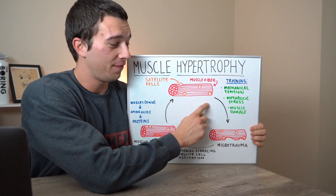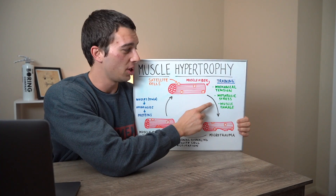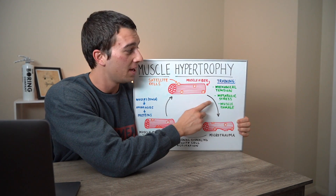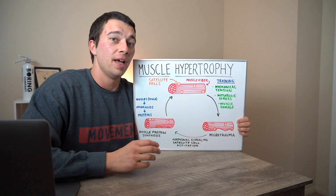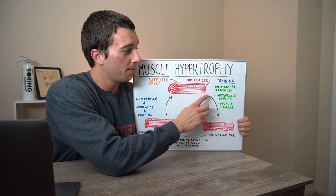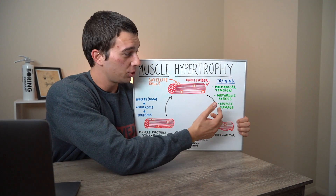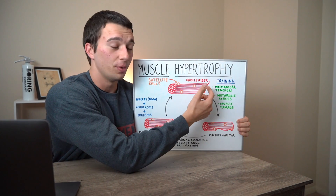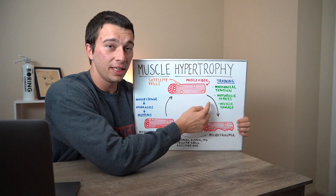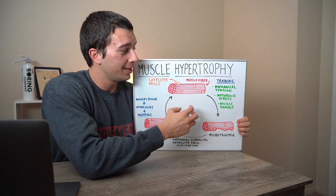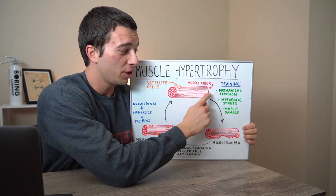Step one is to go from a normal fiber to one that has had some microtrauma — and how do we do that? With training. These are Dr. Schoenfeld's three mechanisms of muscle hypertrophy: mechanical tension, metabolic stress, and muscle damage. The training you program as a strength coach or personal trainer will have some combination of these. High rep training produces more metabolic stress; heavy loaded training produces more mechanical tension. Either way, some combination of these three factors leads to microtrauma at the muscle fiber level.